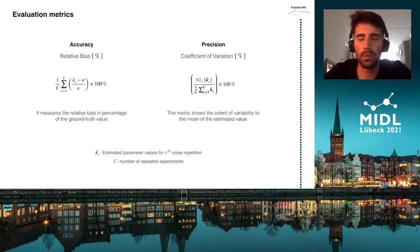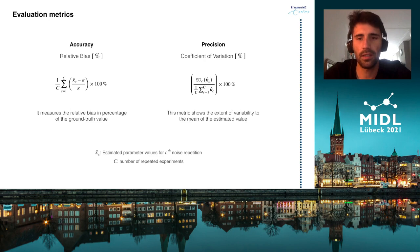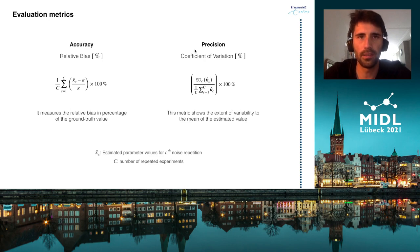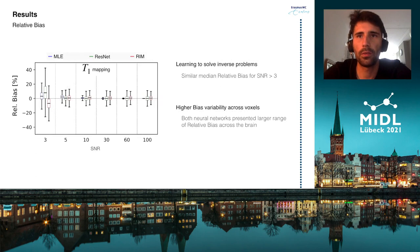We compared the RIM to a maximum likelihood estimator (MLE) and an implementation of the ResNet. To evaluate each method, we measured the estimation accuracy in terms of the relative bias and the estimation precision in terms of coefficient of variation. Here, we present their distribution across the masked brain tissues.